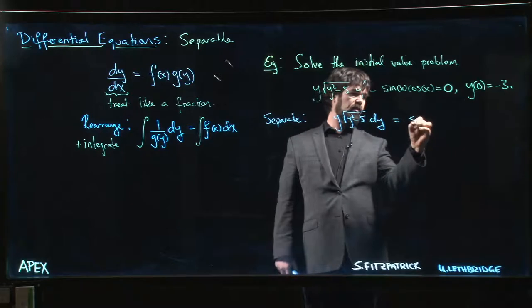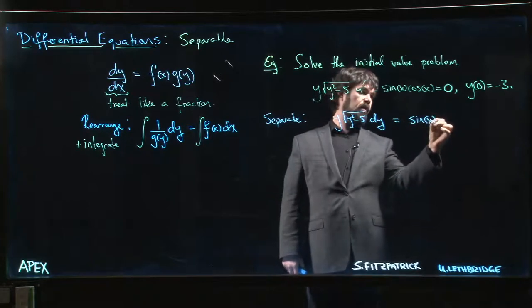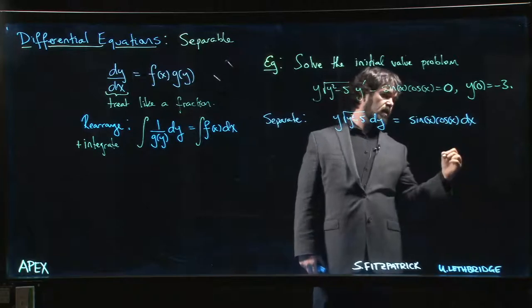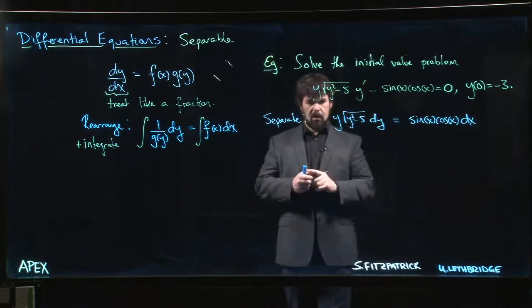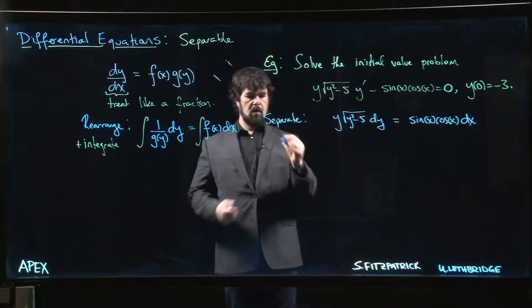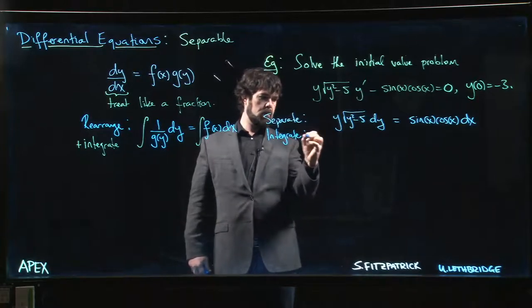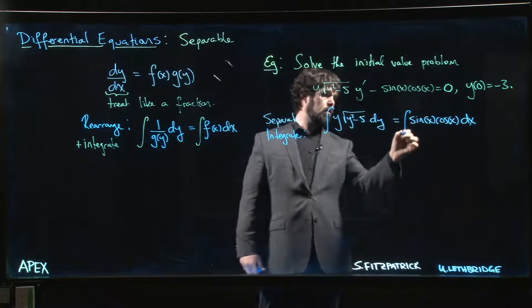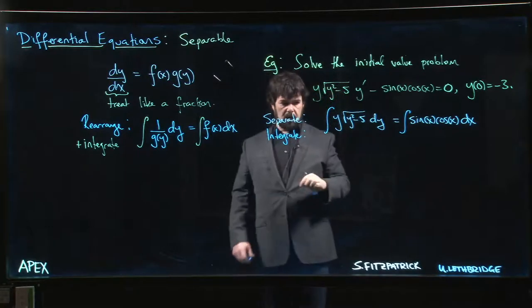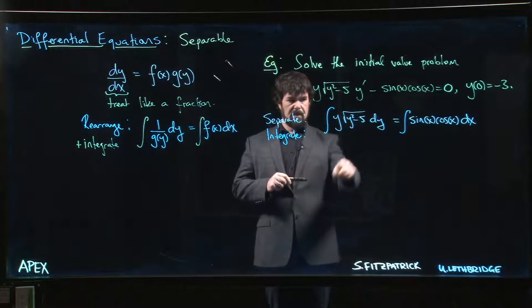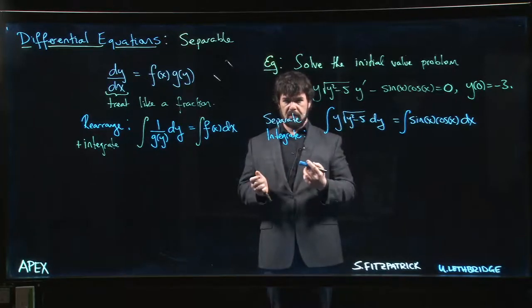Okay, so we separate, we integrate. Now on the left, be careful. You might be tempted, you see the y squared minus 5 and the square root, maybe you're tempted here to do like a secant substitution or a hyperbolic cosine substitution.